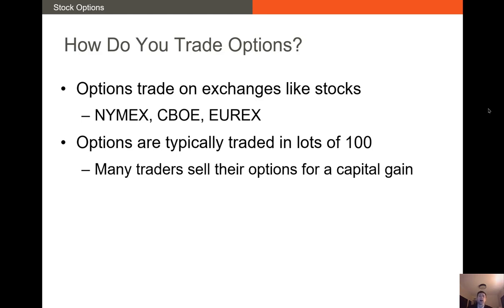Most traders that have American options will sell the option rather than exercise it. Why? Because during the lifetime of the option, as the option becomes more and more in the money, the value of that option is going to rise. So you can actually sell that option for a capital gain. This is normally what I do when I trade options — I buy it, wait for the price to appreciate because it's more in the money, and then sell it.